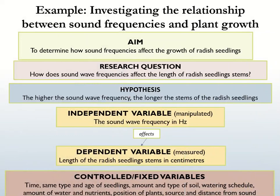Let's do an example showing the relationship between the aim, research question, variables, and hypothesis. You may be interested in sound frequencies and want to determine how they affect the growth of plants. The aim is to determine how sound frequencies affect the growth of radish seedlings. The research question is: how does the sound frequency affect the length of radish seedling stems? The hypothesis is: the higher the sound frequency, the longer the stems of the radish seedlings. The independent variable is the sound frequency, ranging from 200 to 1000 hertz.